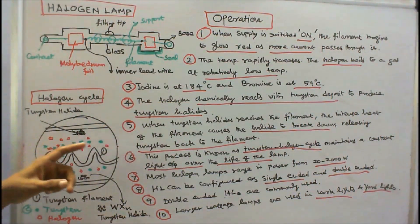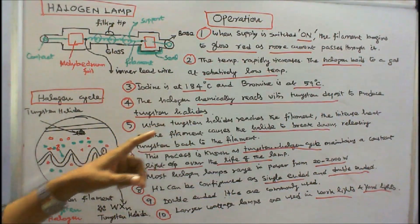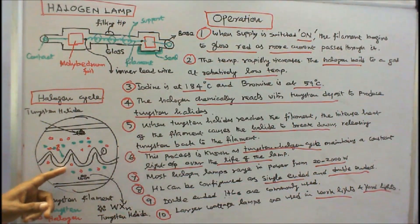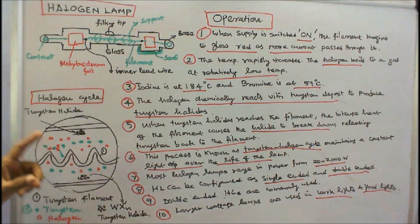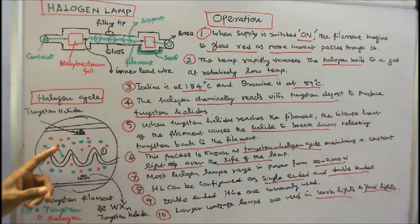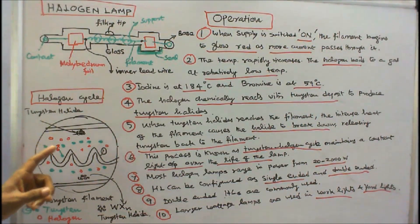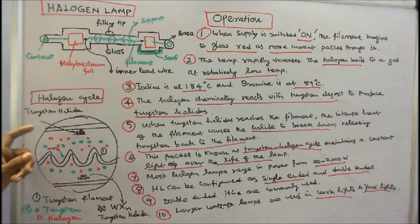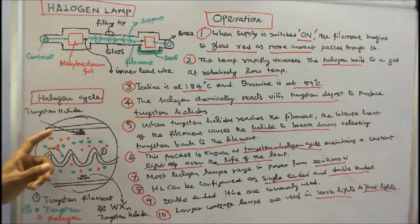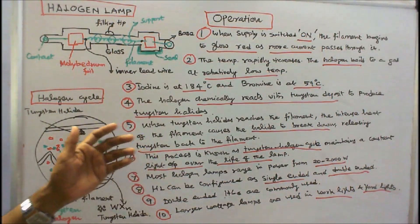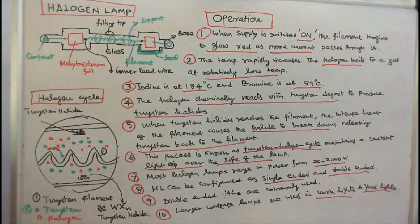When tungsten halides reach the filament, the intense heat of the filament causes the halide to break down, releasing tungsten back to the filament. This process is known as the tungsten halogen cycle, which maintains a constant light output over the life of the lamp. Most halogen lamps range in power from 20 to 2000 watts and can be configured as single-ended or double-ended. Double-ended halogen lamps are commonly used in larger wattage work lights and yard lights.